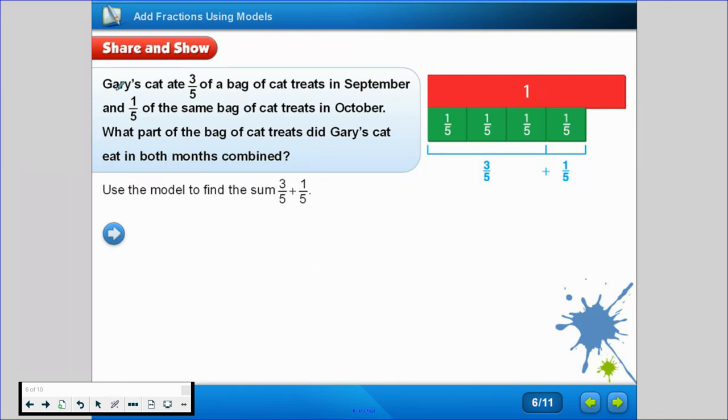All right. Now we have another one. Gary's cat ate 3/5 of a bag of cat treats in September and 1/5 of the same bag of cat treats in October. This is a hungry cat. What part of the bag of cat treats did Gary's cat eat in both months combined? Let's take a look at the model.